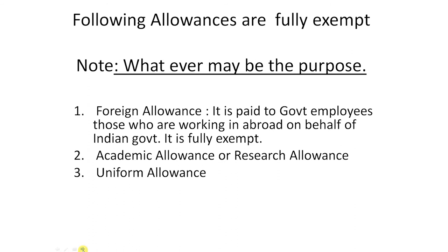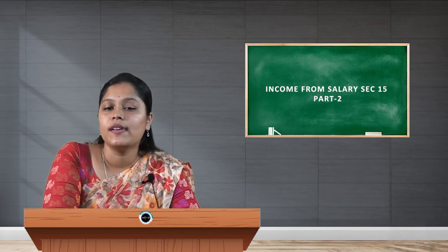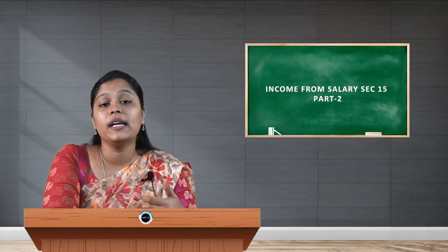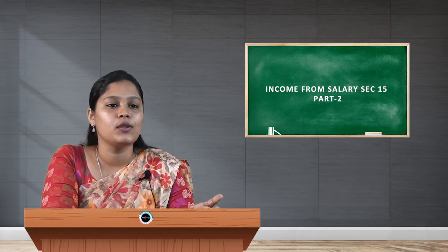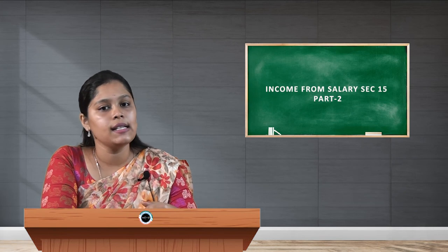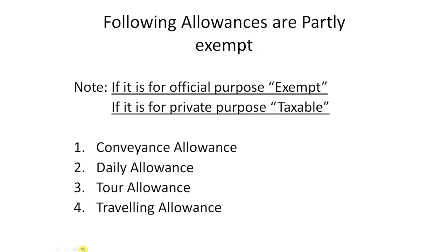The following allowances are partly exempt — if used for official purpose, exempt; if used for private purpose, taxable. Under that, first one: conveyance allowance. Conveyance allowances are those allowances which are provided to the employees in order to meet their daily commuting expenses. Official purpose — exempt; private purpose — taxable. Next one: daily allowance. Daily allowances are those allowances provided to the employees in order to meet daily expenses. Official purpose — exempt; private purpose — taxable.